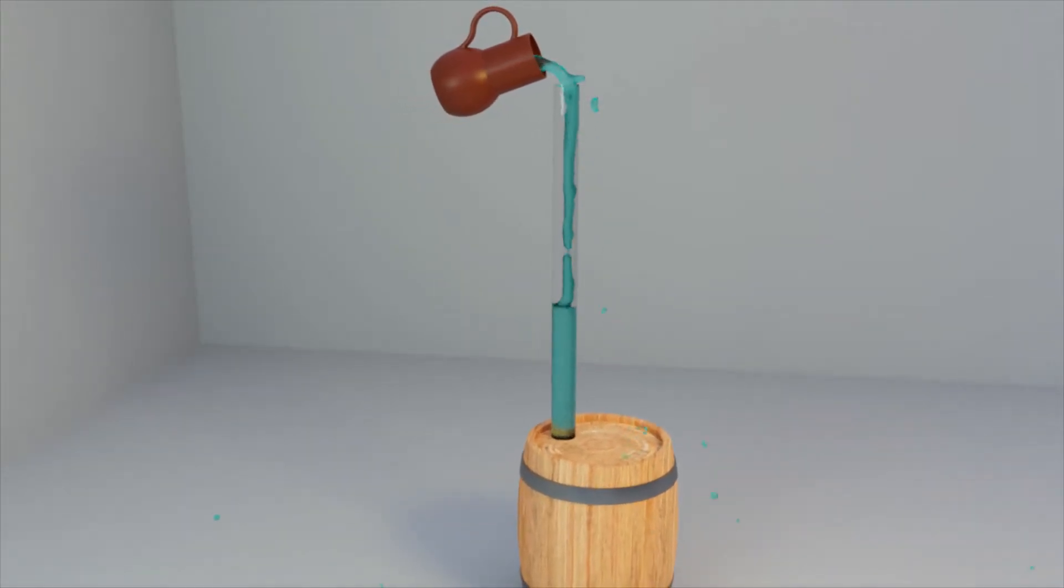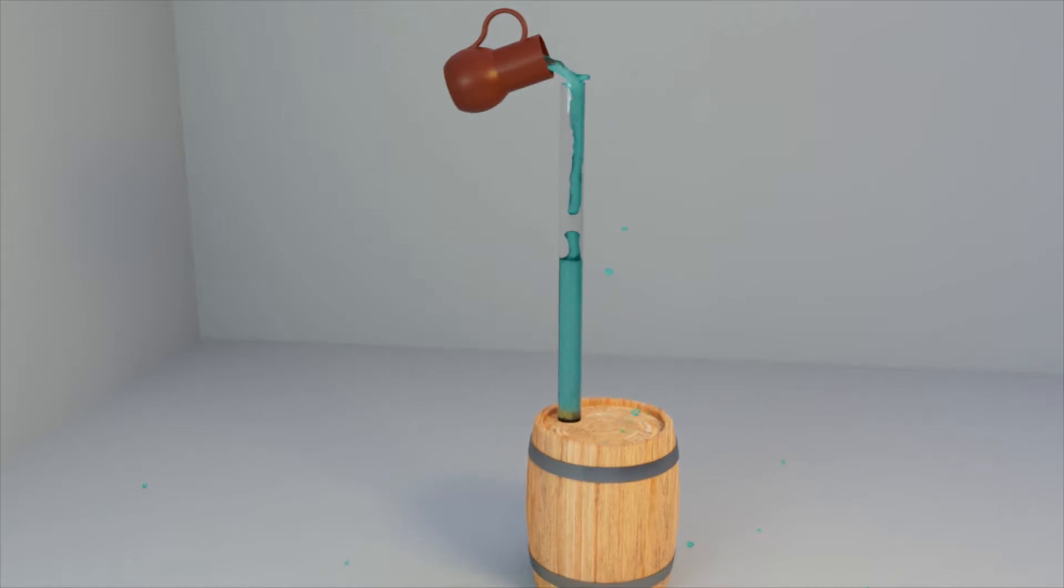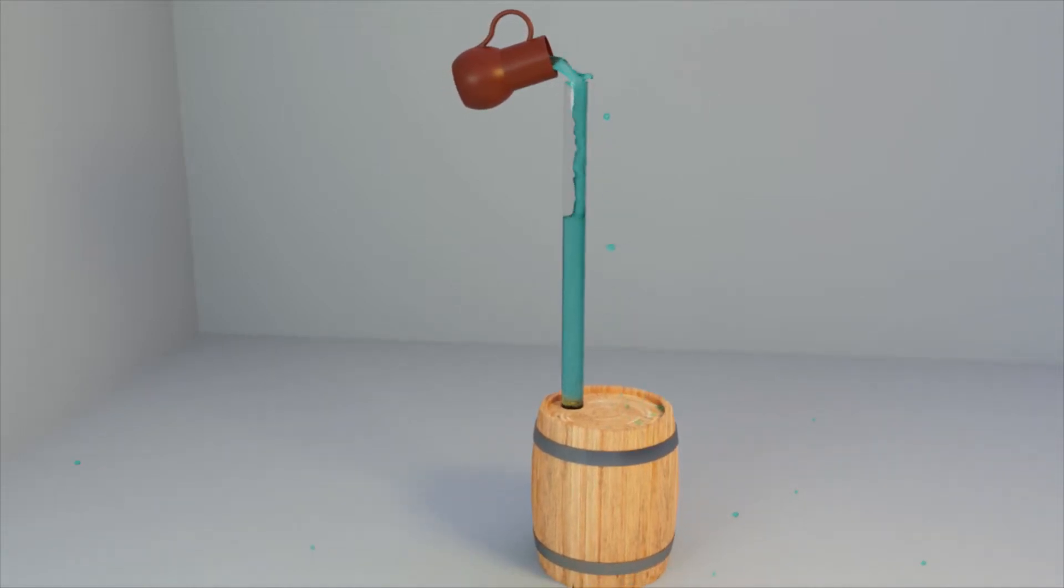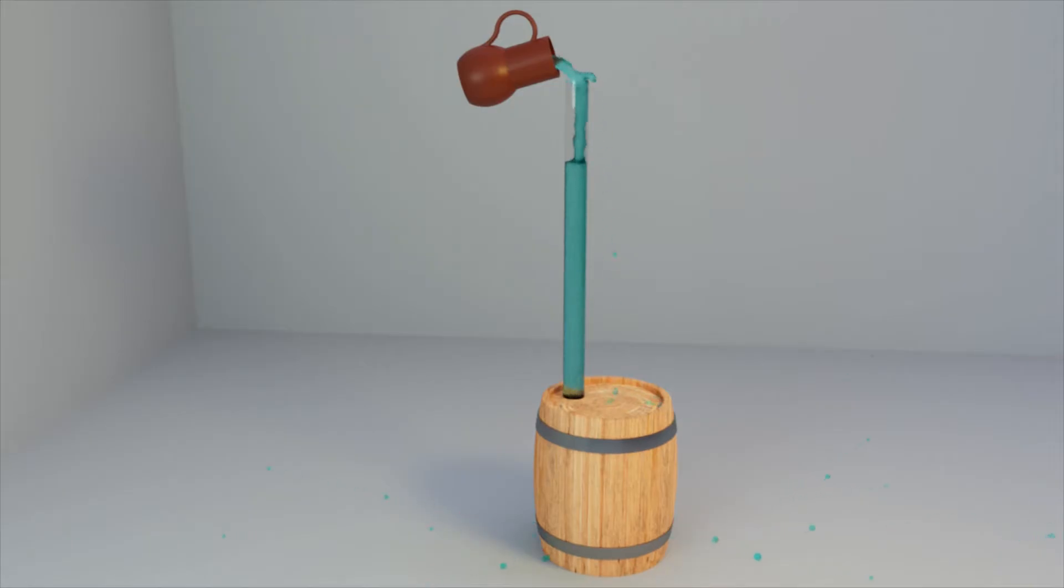As is known, the pressure value depends on the height of the liquid column, the density of this liquid, and the value of the acceleration of gravity. The pressure in the barrel increased so much that the barrel could not withstand the stress and burst.